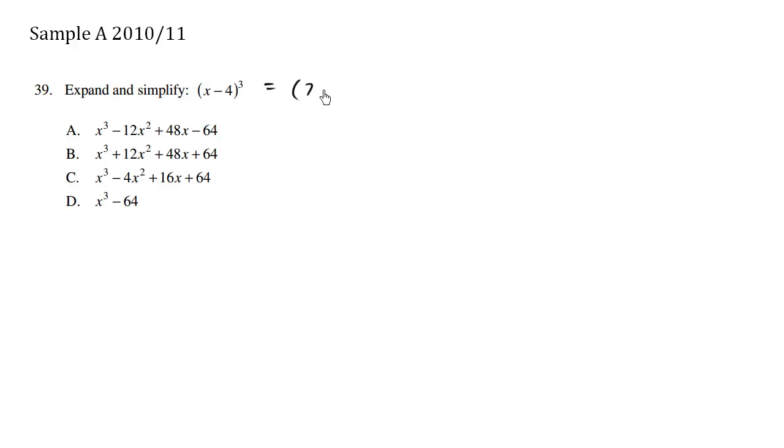x minus 4 cubed is the same thing as x minus 4, times x minus 4, times x minus 4. And this is where we can just focus on one part first, multiplied by this factor here.